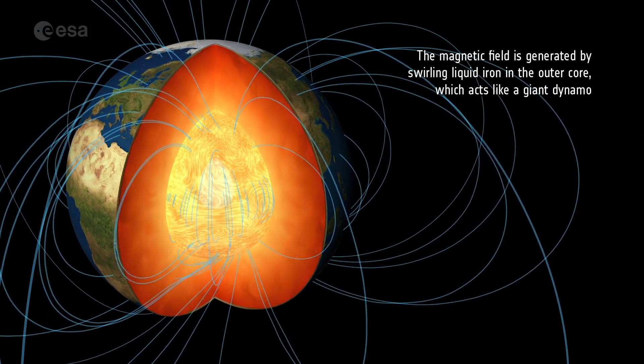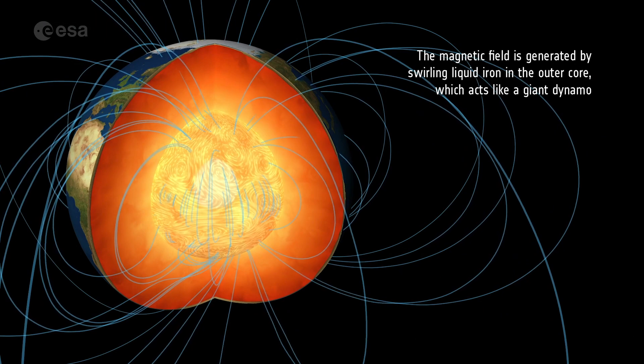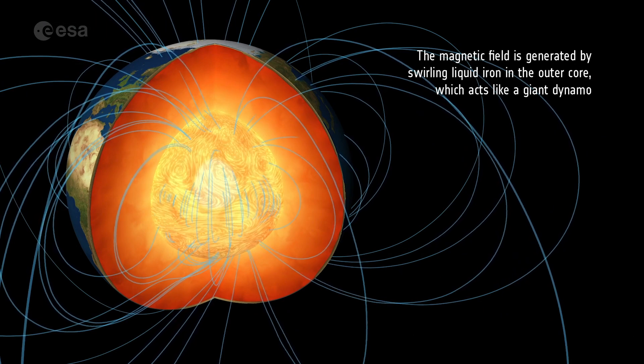The magnetic field is generated by swirling liquid iron in the outer core, which acts like a giant dynamo.